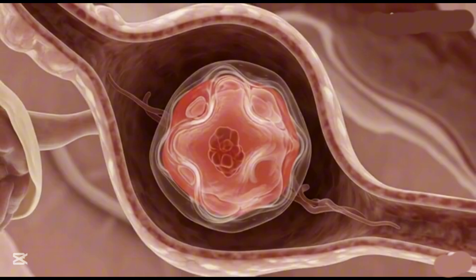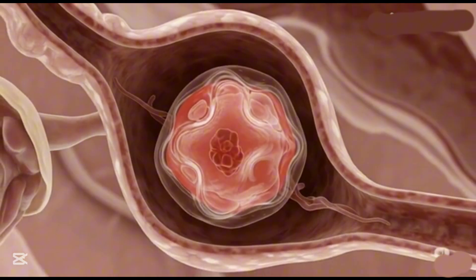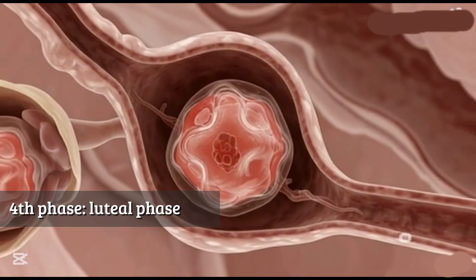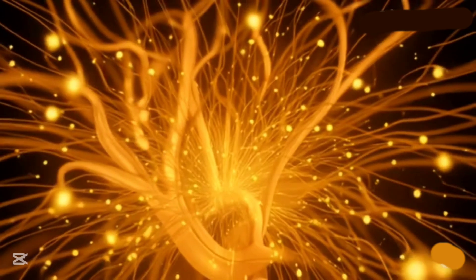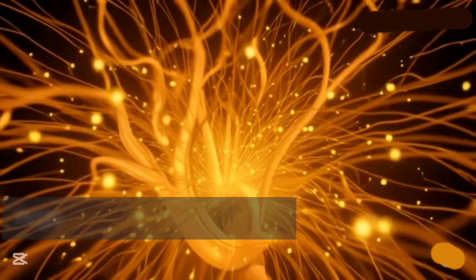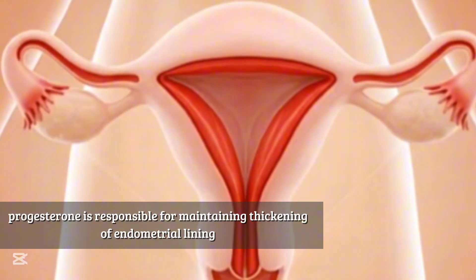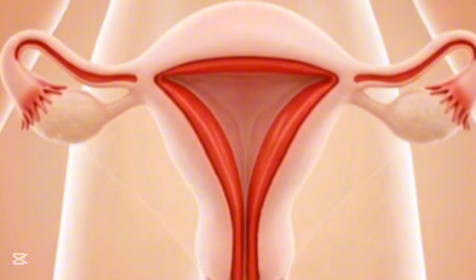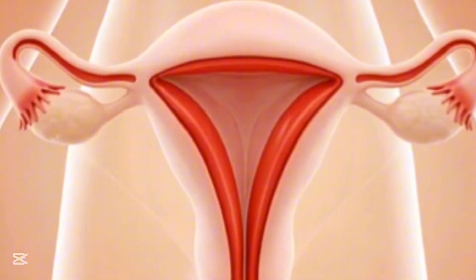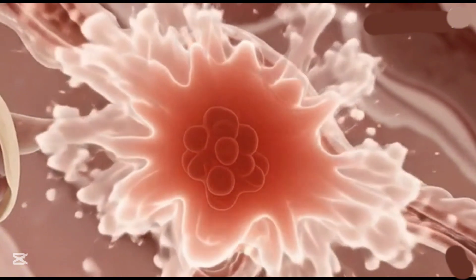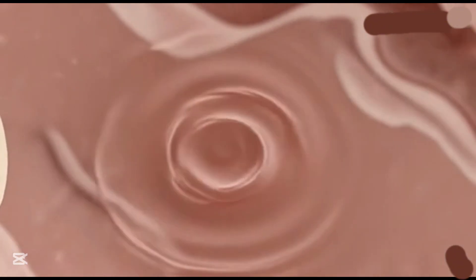After ovulation, the ruptured follicle in your ovary transforms into the corpus luteum — this is called the luteal phase. The corpus luteum starts producing a hormone called progesterone, which is essential for maintaining that thick uterine lining, just in case an egg gets fertilized and implants. If pregnancy does not occur, the corpus luteum breaks down, progesterone levels drop, and this drop signals the uterus to shed its lining, bringing us right back to day one of the menstrual phase.